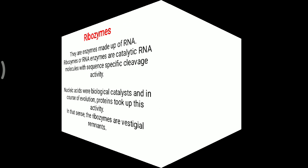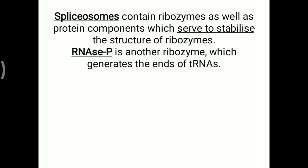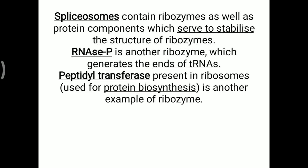Important points related to ribozymes: spliceosomes contain ribozymes as well as protein components, which serve to stabilize the structure of ribozymes. Spliceosomes are also involved in the removal of introns. RNase P is another ribozyme which generates the ends of tRNA and is also involved in other molecular activities.